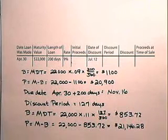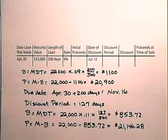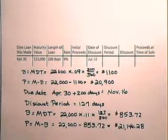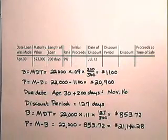The proceeds equal the maturity value minus the bank discount: $22,000 minus $853.72 gives proceeds of $21,146.28. So this note, which was due on November 16th, was discounted on July 12th and $21,146.28 was the value of the note on that day. In this section, we have discounted both simple interest notes and simple discount notes before their maturity dates. Businesses often accept notes as payments before the due date, so you need to practice discounting notes.